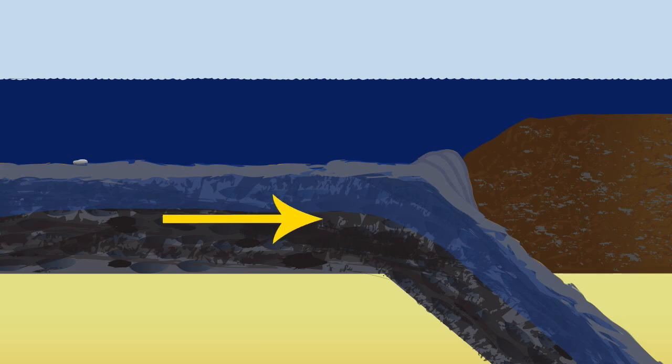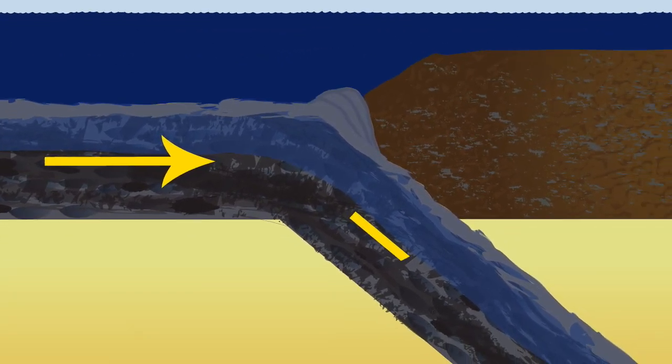At a subduction zone, the saturated ocean floor is pushed to regions of high temperature and pressure, an environment ripe for volcano formation.